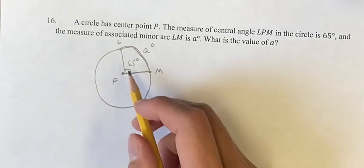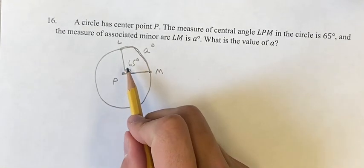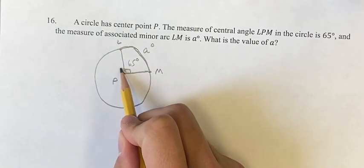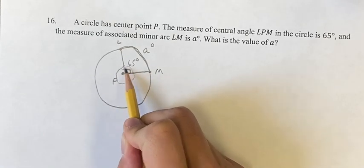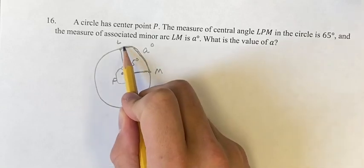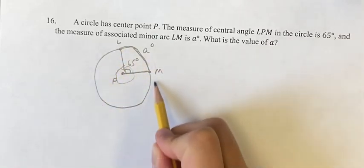Right? So you can imagine whatever chunk the 65 degrees takes out of the 360 degrees you can imagine here, this minor arc takes that same chunk out of the circumference of the circle.